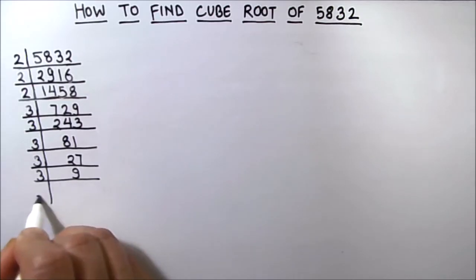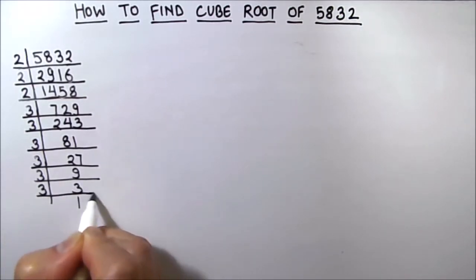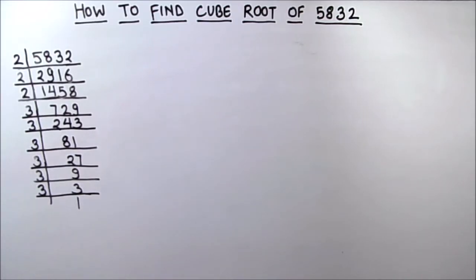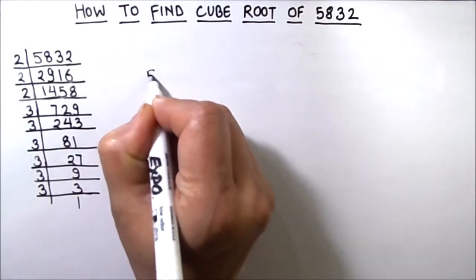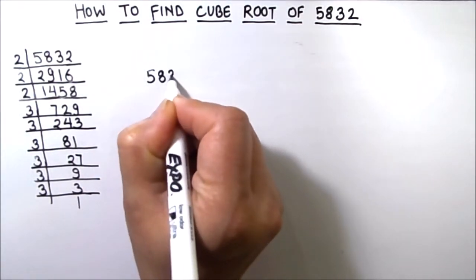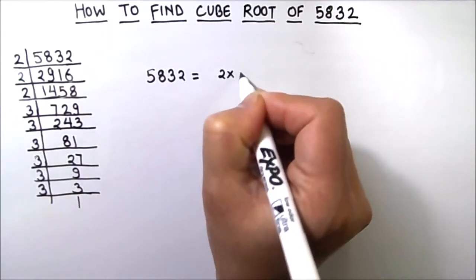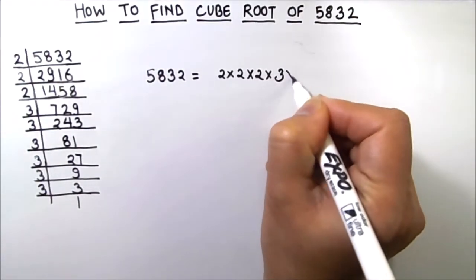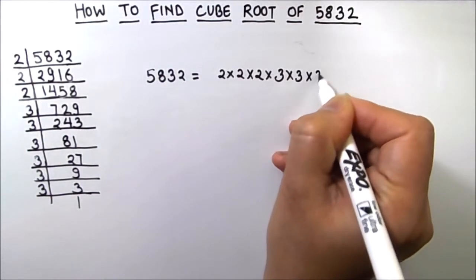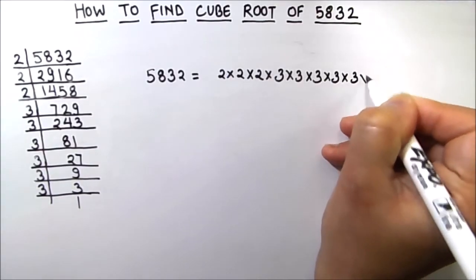3 times 3 is 9 and 3 times 1 is 3. So now we have got all the factors of 5832. Let's write it as the product of its prime factors: 2 times 2 times 2 times 3 times 3 times 3 times 3 times 3 times 3.